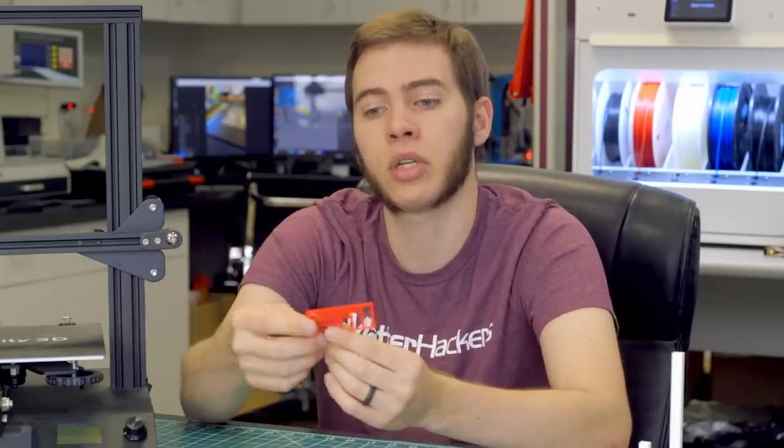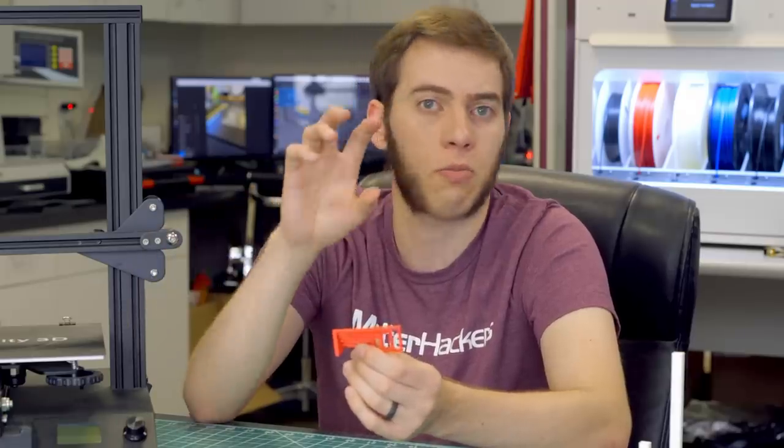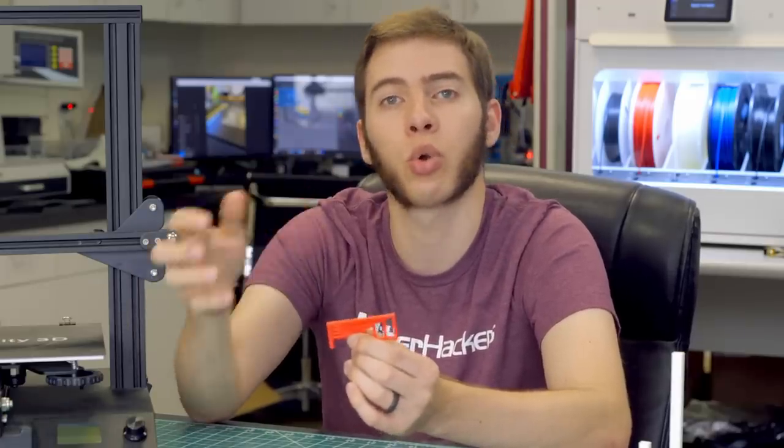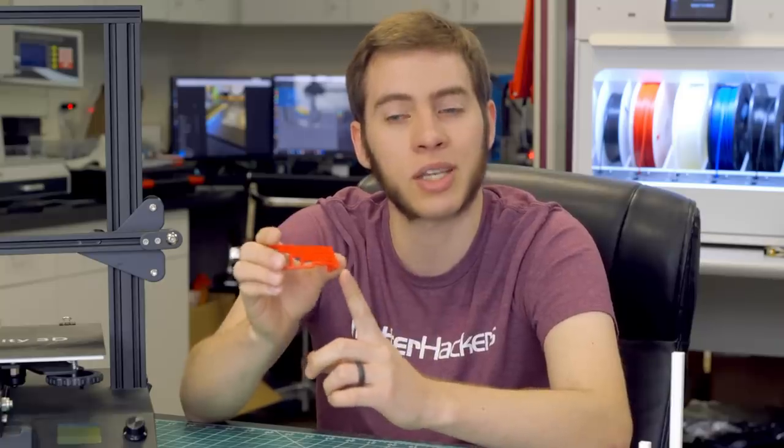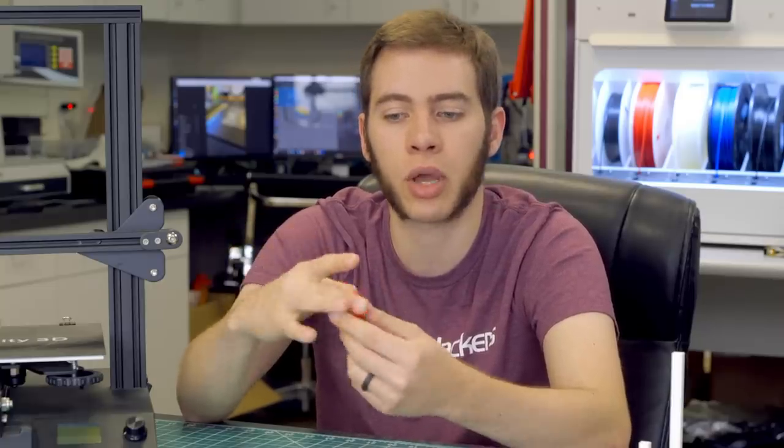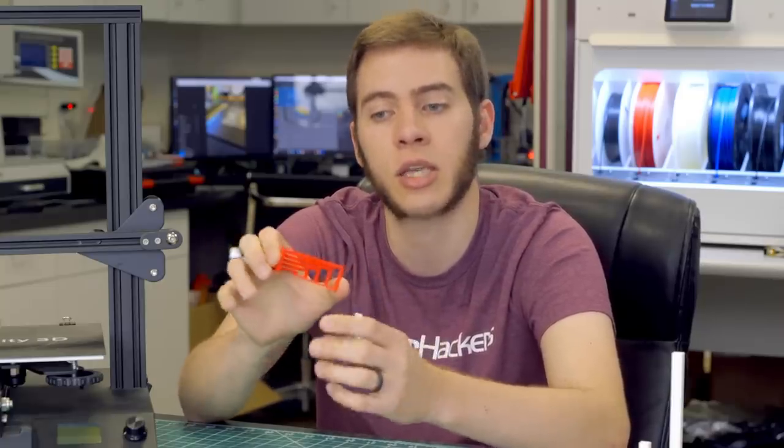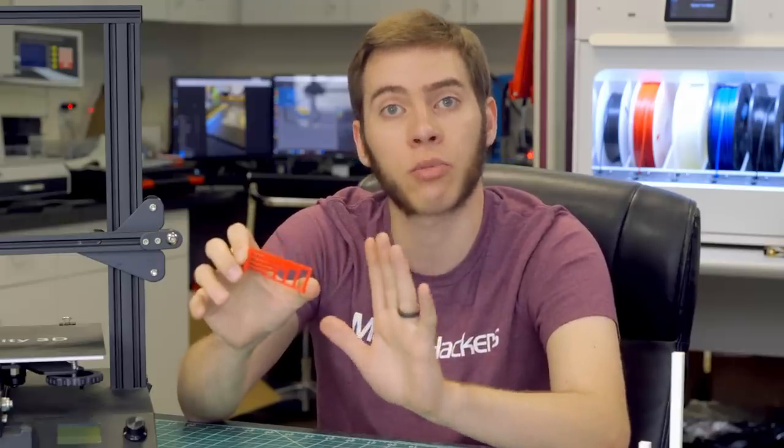You're not going to see something nearly this extreme in most of your printing. Usually what it'll be, it'll be holes in the sides of your part, or grooves, or really small details. Usually you won't see something as big as this that you need to bridge over, but this is a really good test to see how well your algorithm for the slicer you've had tailored to your printer, how well that works out.